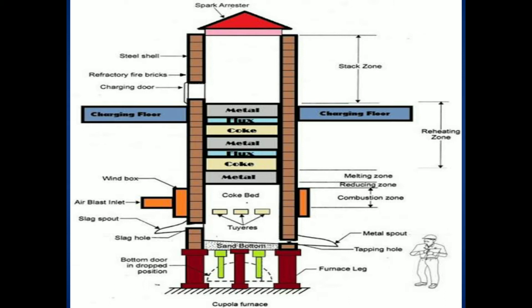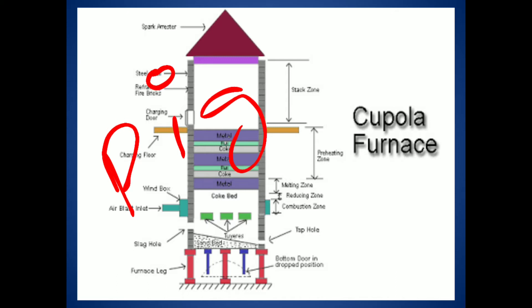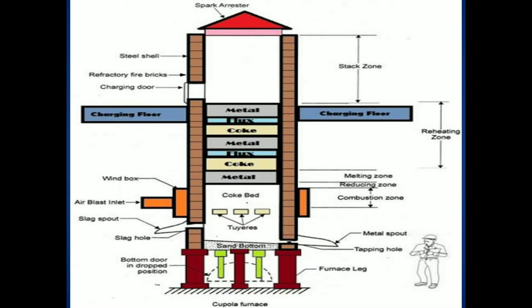This is the cupola furnace setup. Generally, by using this furnace we manufacture cast iron. The raw material is pig iron. Pig iron produced in blast furnaces is not suitable for industrial applications, so we need to refine the pig iron. By using a cupola furnace, we obtain cast iron by refining pig iron.